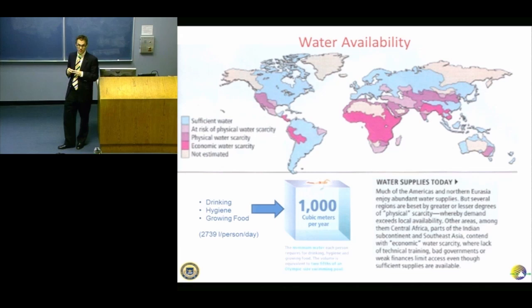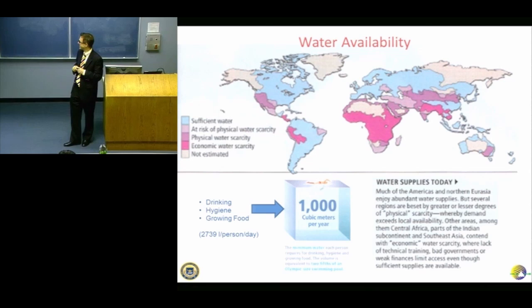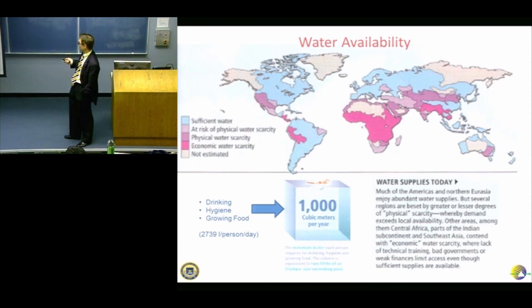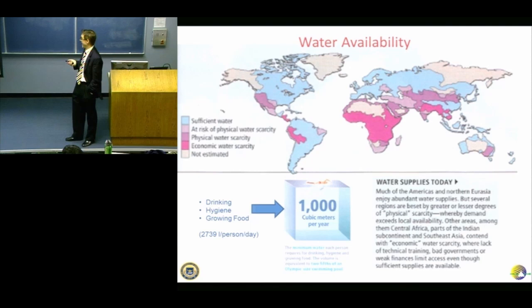A student asks about India on the map — the northeast looks red despite being a very wet region. The instructor clarifies: economic scarcity doesn't mean there's no water there. It means there is a lack of access for all people, generally driven by economics. Another student asks if that refers to infrastructure — yes, it's an infrastructure issue.